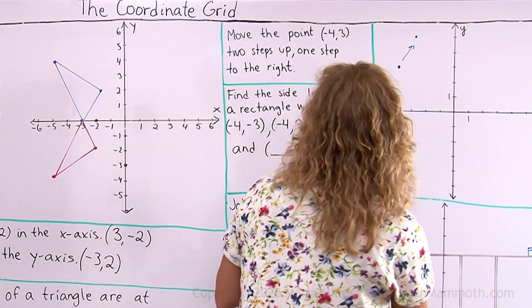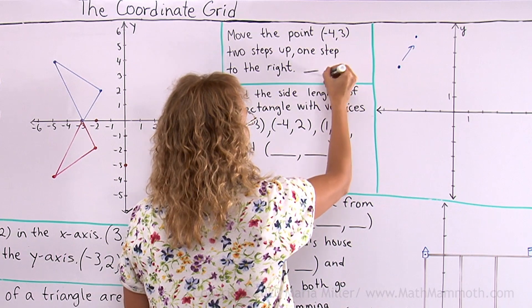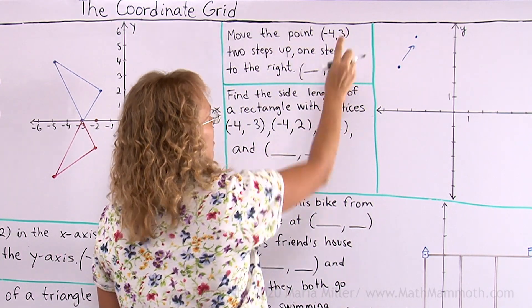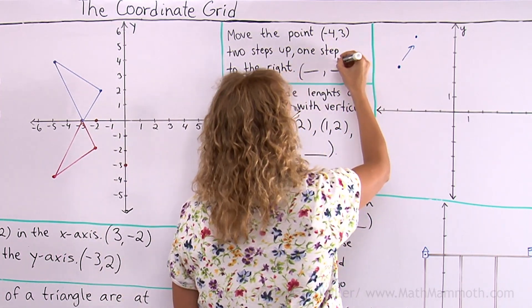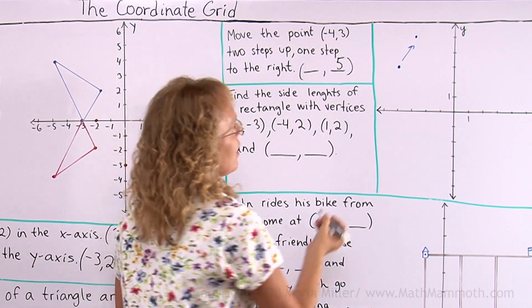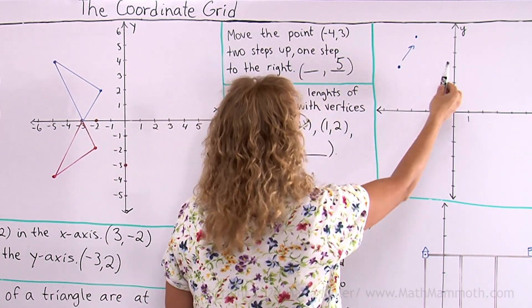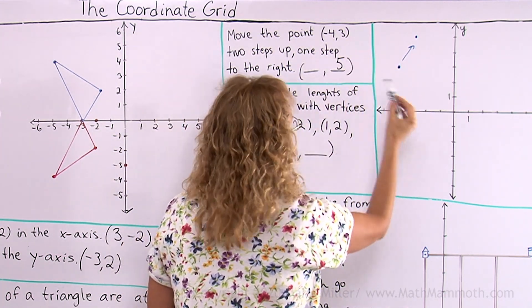Okay, since it moved two steps up and it was at the height of three, now it is at the height of five, right? And it moved one step to the right so this negative four changed to negative three.